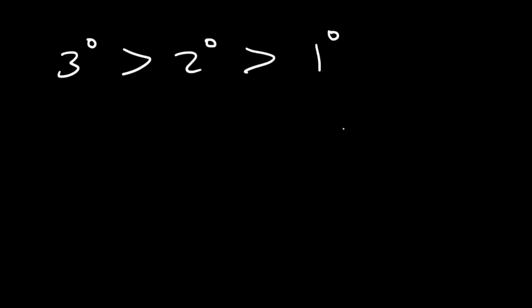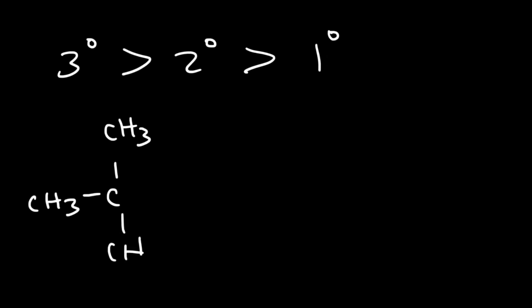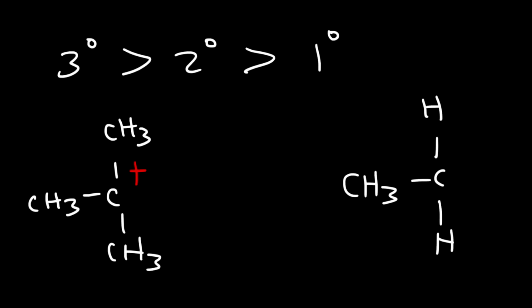Recall that a tertiary carbocation is more stable than a secondary one, which is more stable than a primary one. Comparing a tertiary carbocation with a primary carbocation: methyl groups are electron-donating groups relative to hydrogen. As a result, they can donate electron density to the carbocation through the sigma bond — known as the inductive effect — or through the overlap of atomic orbitals, known as hyperconjugation. A carbocation with more methyl groups attached is more stable than one with fewer.